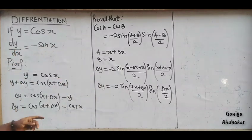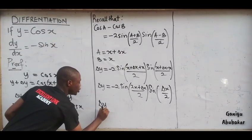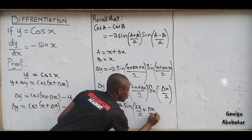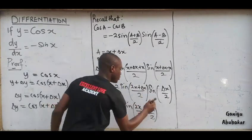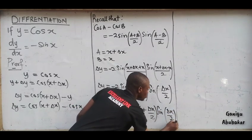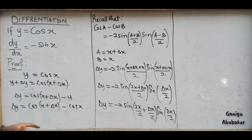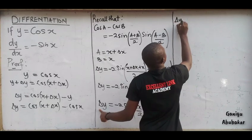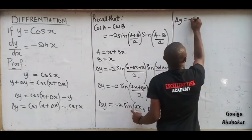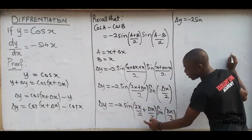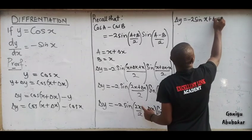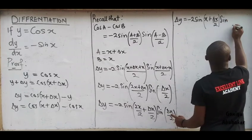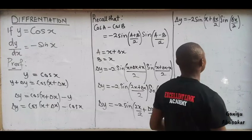At this point, the 2x over 2 simplifies. I'll have Δy equal to negative 2 sin(x + Δx/2) times sin(Δx/2). Now my next step is to divide both sides by Δx. So I divide by Δx and get Δy/Δx equals negative 2 sin(x + Δx/2) times sin(Δx/2) all over Δx.